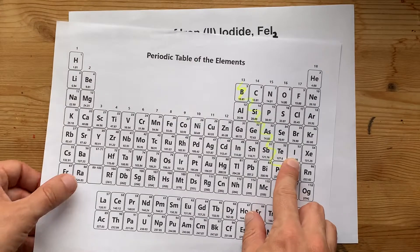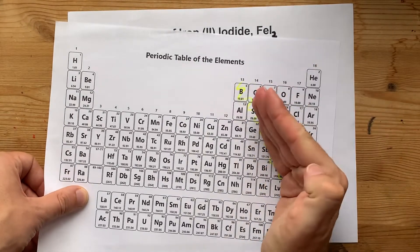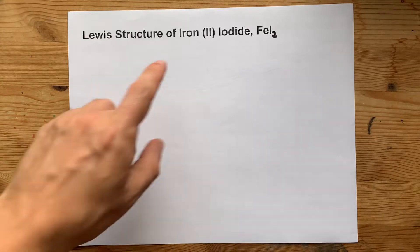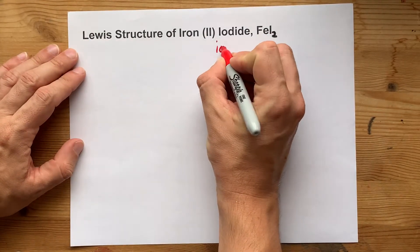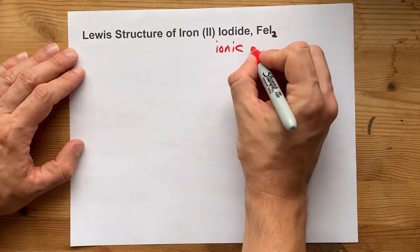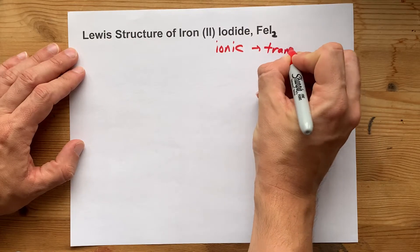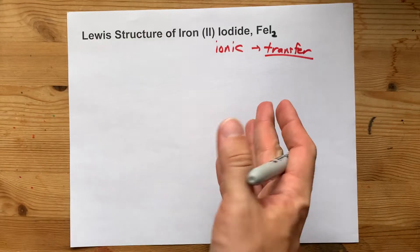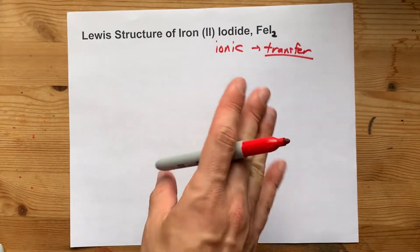Bonding with iodine, which is here, and the halogens on the right side of the staircase, it's a non-metal. Metals plus non-metals make ionic compounds, and that means there is a transfer of electrons, not a sharing of electrons like in covalent Lewis structures.